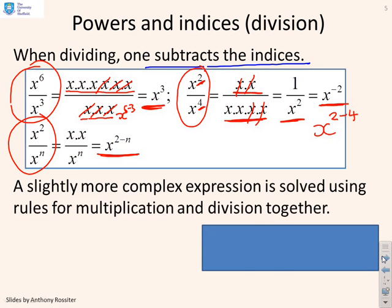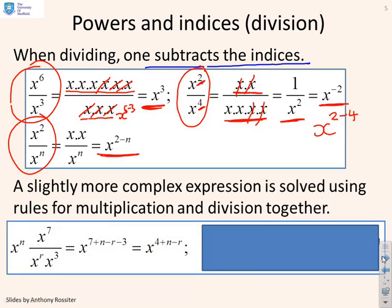I could do a slightly more complex expression if you'd like one. So here we go. x to the power n times x to the 7 over x to the r, x to the 3 and you'll notice I just add the powers of the numerator, subtract the powers of the denominator so I get this 7 plus n, that's from the numerator, minus r minus 3, that's from the denominator and so the result is this x to the 4 plus n minus r.